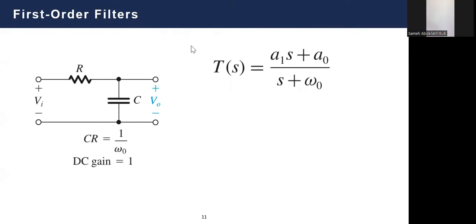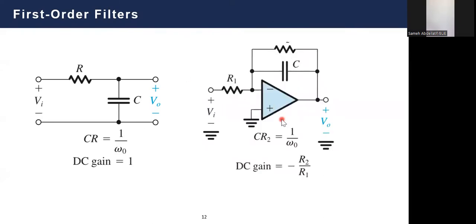What about a circuit with an operational amplifier, resistors R1 and R2, and a capacitor in the feedback path? Let's go back to our Electronics 1 course analysis and find the transfer function V_out/V_in for this circuit.